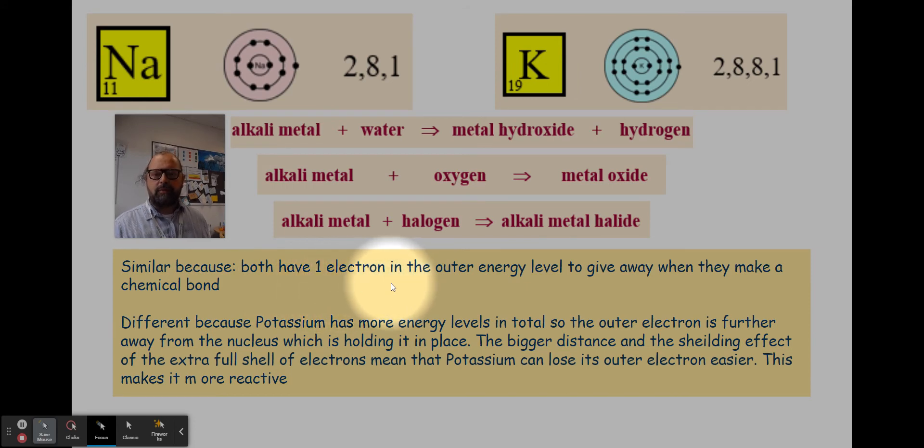So why do sodium and potassium behave in a similar way? Because they both have one electron in their outermost shell to make bonds with. How are they different? They're different because potassium is more reactive than sodium.